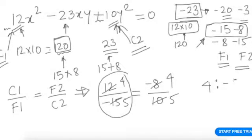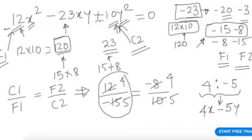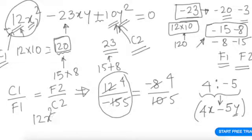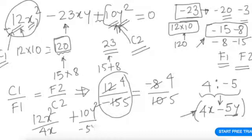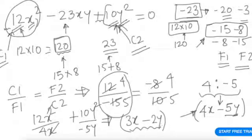We got a ratio of 4 to −5, and since it is in two variables x and y, the first factor is 4x − 5y. To find the second factor: the first term 12x² divided by the first term of the factor 4x, and the last term 10y² divided by −5y. The solution gives 3x − 2y.